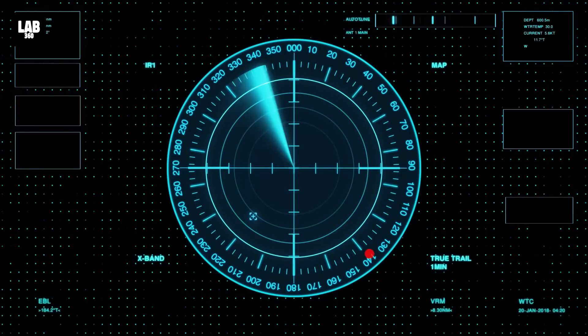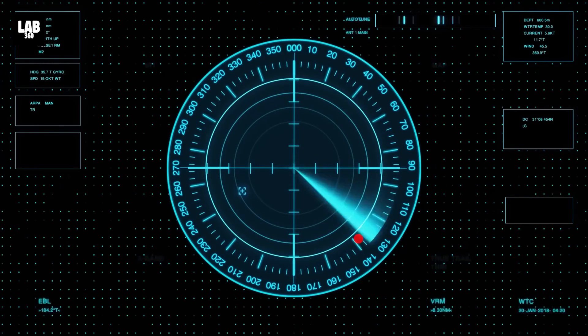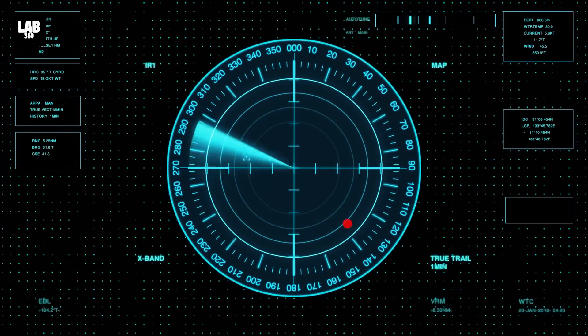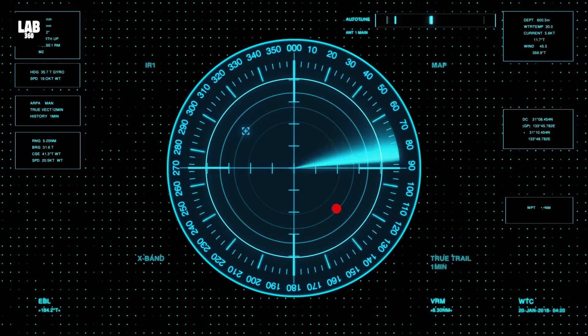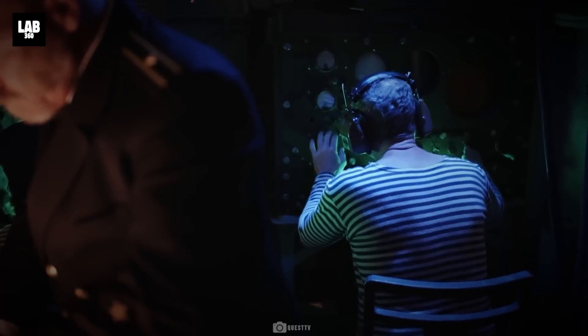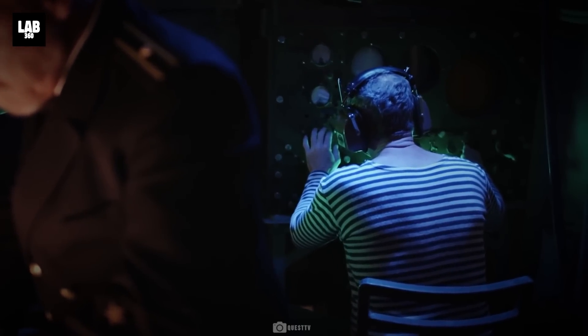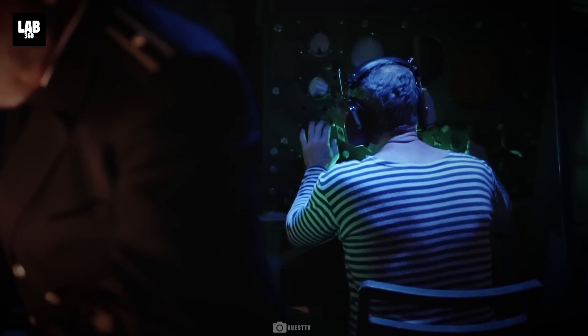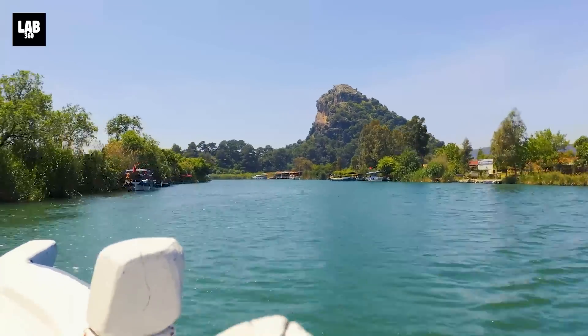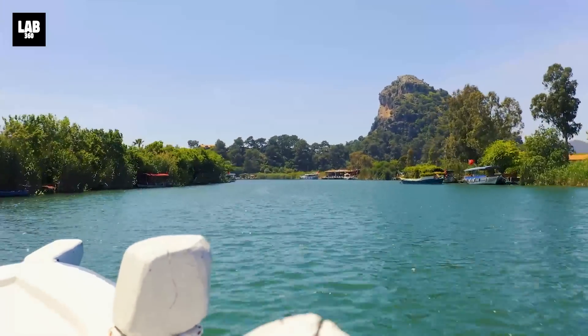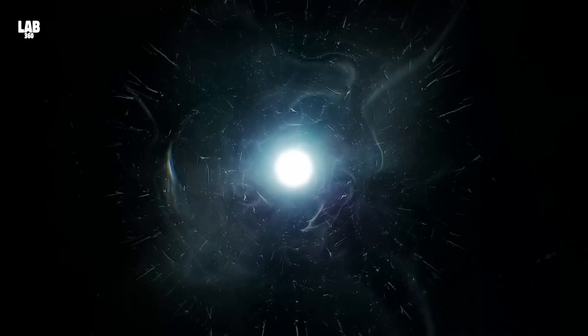The radars on Russian submarines on several occasions gave readings of material objects moving at incredible speeds. Calculations showed speeds of about 230 knots or 400 kilometers per hour. Speeding so fast is a challenge even on the surface. Whatever they were defied our laws of physics.